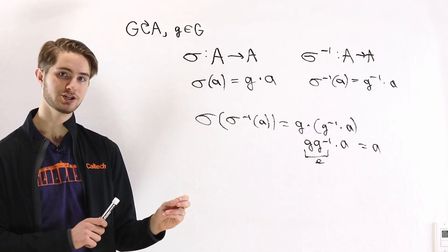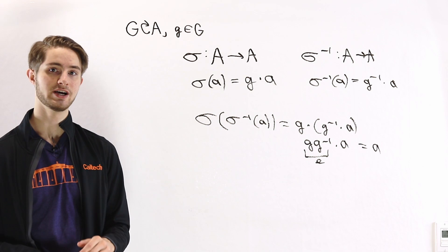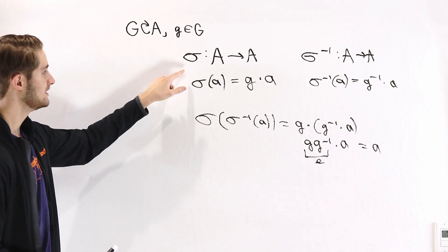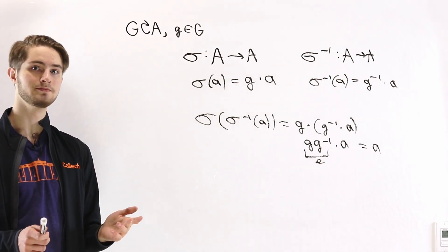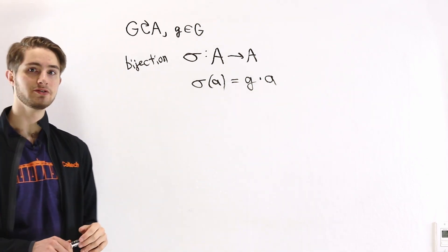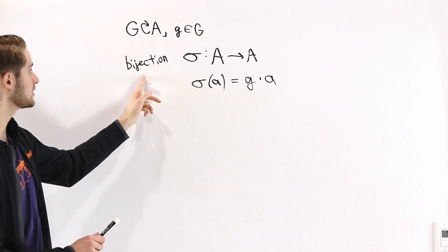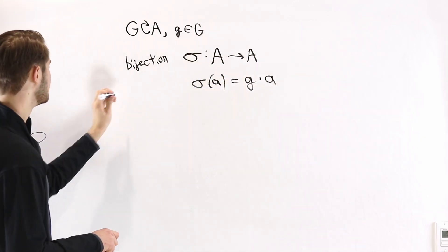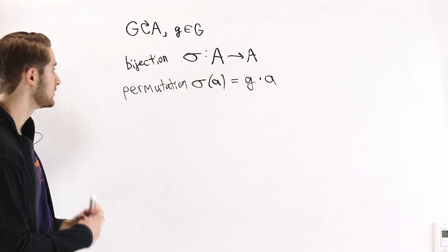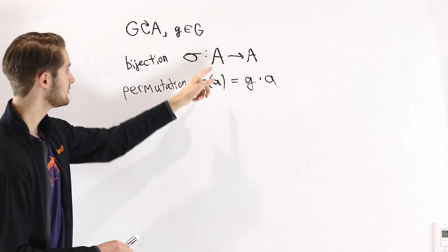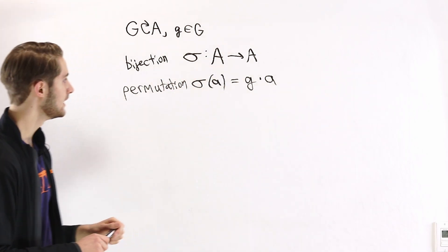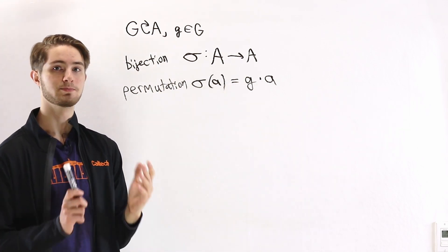That means σ⁻¹ is a two-sided inverse of σ, and we know that if a function has a two-sided inverse then it must be bijective — you can check the linked video for an explanation of that. Therefore σ is a bijection. The reason it's important that this map is a bijection is that a bijection from A to itself is called a permutation. When we go from A to g·A, the elements in the set get permuted — switched around among each other — so we can describe this as a permutation.